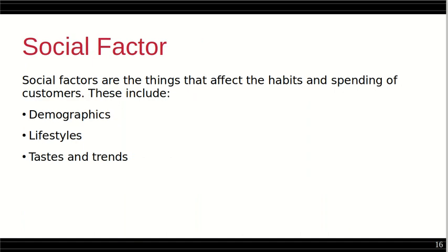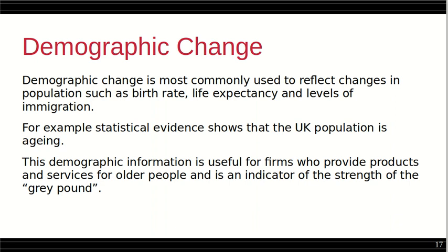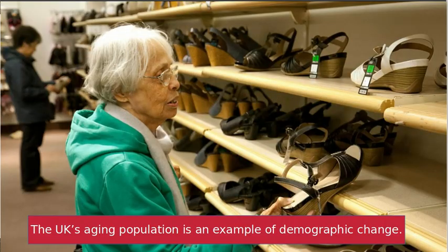Social factors are the things that affect the habits and spending of customers. These include demographics, lifestyles, tastes, and trends. A demographic change is most commonly used to reflect changes in populations such as birth rate, life expectancy, and levels of immigration. For example, statistical evidence shows that the UK population is aging. This demographic information is useful for firms who provide products and services for older people and is an indicator of the strength of the grey pound.